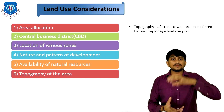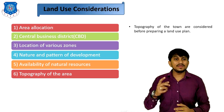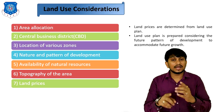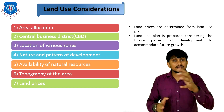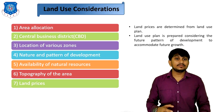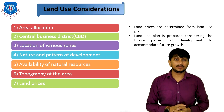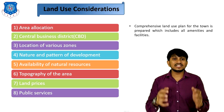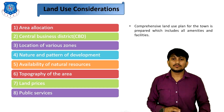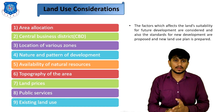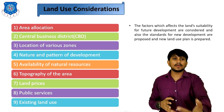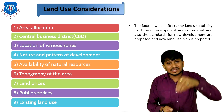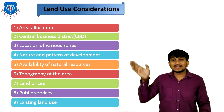Sixth is the topography of the area — the level of land should be considered while land use planning. Seventh is land price — land prices are also considered; you cannot provide an industrial zone where land prices are high. The land use plan is also prepared considering future patterns of development to accommodate future growth. Eighth is public services — a comprehensive land use plan is prepared which includes all amenities and facilities. Ninth is existing land use — factors affecting land suitability for future development are considered, standards for new development are proposed, and a new land use plan is prepared based on existing land use.